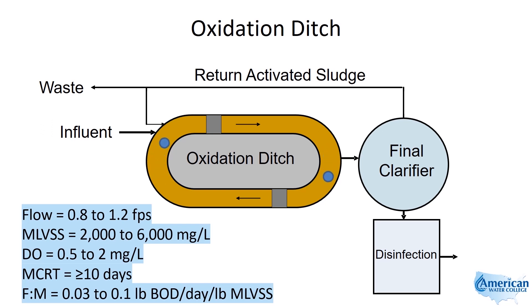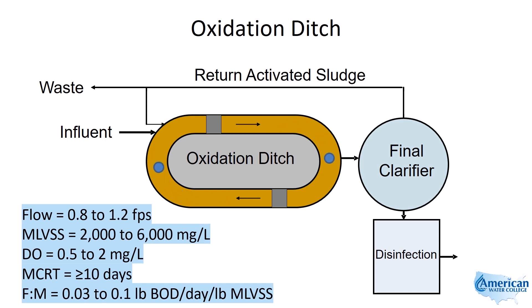The rotors act as the aeration devices and they maintain the flow between 0.8 and 1.2 feet per second, which prevents the mixed liquor volatile suspended solids from settling out. However, it does allow the heavier solids to settle out, so grit will settle in the bottom of the ditch.